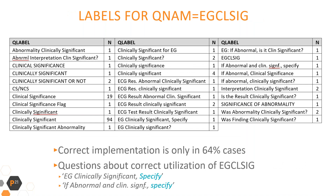While the expected variable name or QNAM value to store clinically significant information in the EG domain is EGCLSIG, there are many variations in implementation, which increase the actual use of clinical significance flag in SUPP-EG dataset to 73% of studies with a SUPP-EG dataset. EGCLSIG is a standard CDISC SUPPQUAL variable from SDTM IG Appendix C2. It looks like the industry successfully utilizes the correct variable name in 91% of cases. However, there are many variations in labels or QLABEL values for this variable — in 148 studies there are 31 different labels assigned to EGCLSIG.